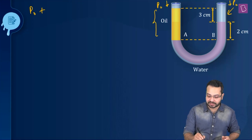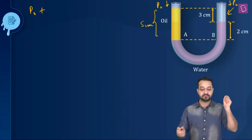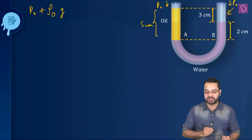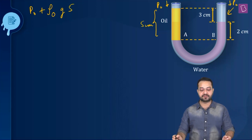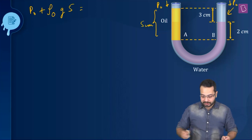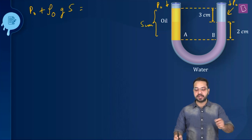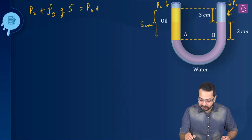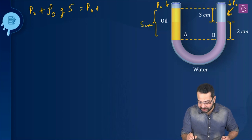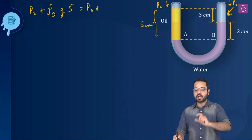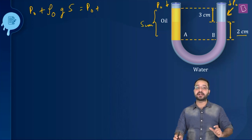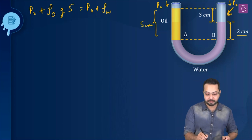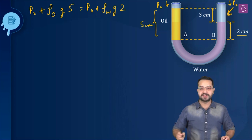It is very simple to see that the oil column height is 5 cm. So pressure at A becomes the density of oil multiplied by g multiplied by 5 cm. The pressure at point B is going to be P₀, because there is air over the water arm, plus the pressure due to a water column of height 2 cm, which is the density of water multiplied by g times 2 cm.